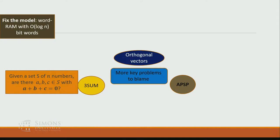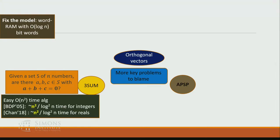In the 3SUM problem, we are given a set S of n numbers, and we want to decide whether there are three numbers that sum to zero. An easy exercise gives an O(n²) time algorithm, and the current best running time is n²/log²(n) for both integer and real inputs. The 3SUM hypothesis states that there is no polynomially faster than n² time algorithm for 3SUM.